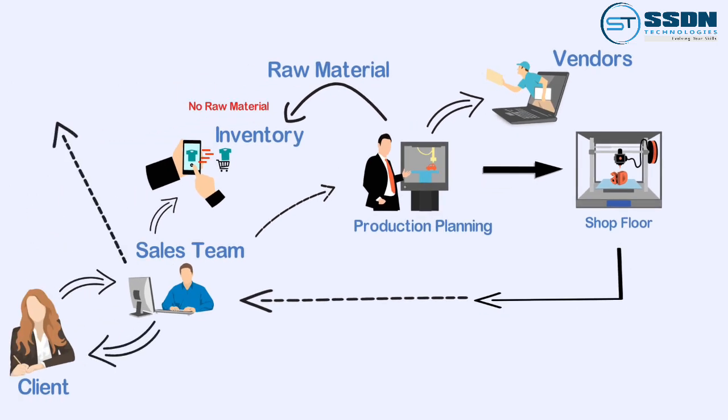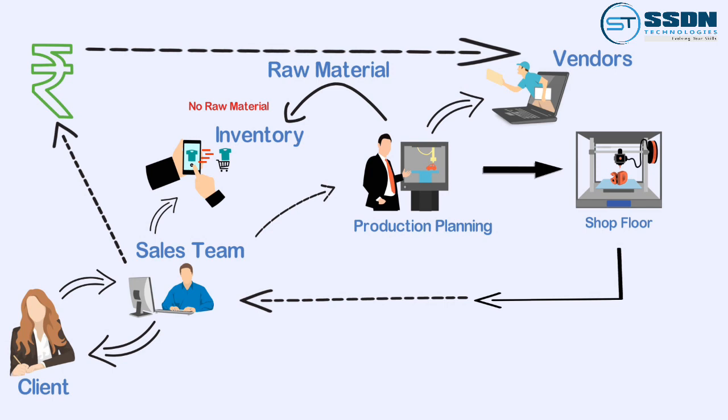The sales team updates the finances with the revenue generated by the sale, and the production planning team updates the finance with payments to be made to different vendors. All these departments approach HR if there is any human resource related issue. This is the typical business process — you can see how much communication, data exchange, and data management is involved.